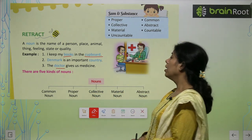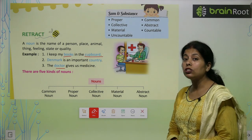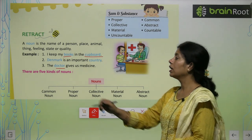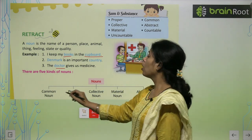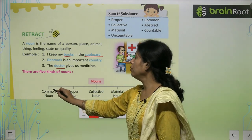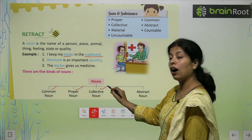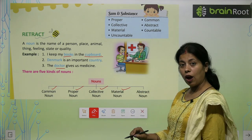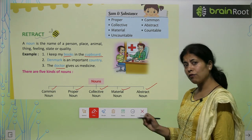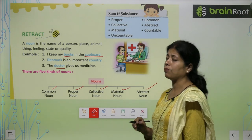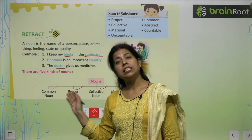There are five kinds of noun, friends: Common noun, Proper noun, Collective noun, Material noun, and Abstract noun. One by one in this chapter we will read about these nouns.